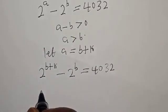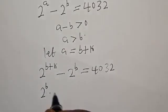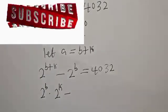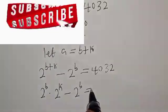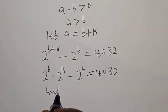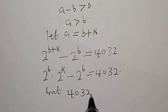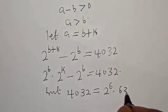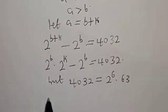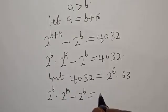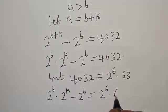Then we have 2 raised to power b multiplied by 2 raised to power k minus 2 raised to power b equal to 40. Now, 40 is the same as 2 raised to power 3 multiplied by 5. Therefore we have 2 raised to power b multiplied by 2 raised to power k minus 2 raised to power b equal to 2 raised to power 3 multiplied by 5.